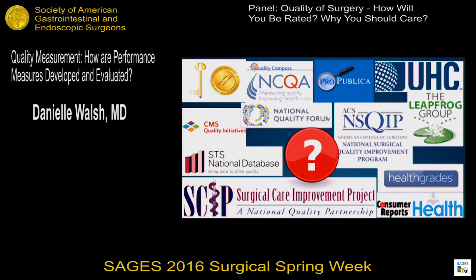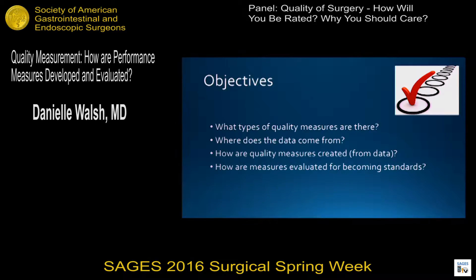I have nothing to disclose. When we look at the quality landscape, there are really a lot of people out there who are using the word quality as a measure and trying to get us to participate in their world of quality. There's S-CHIP, there's Leapfrog Group, there's UHC — all of these different organizations who have the word quality, but not all of them are using the same measures, metrics, or processes to evaluate us. The purpose of this talk is to give you more information about what quality measures exist, where the data comes from, how they are created, and how they are being used to create standards that we are held to in these various reporting structures.